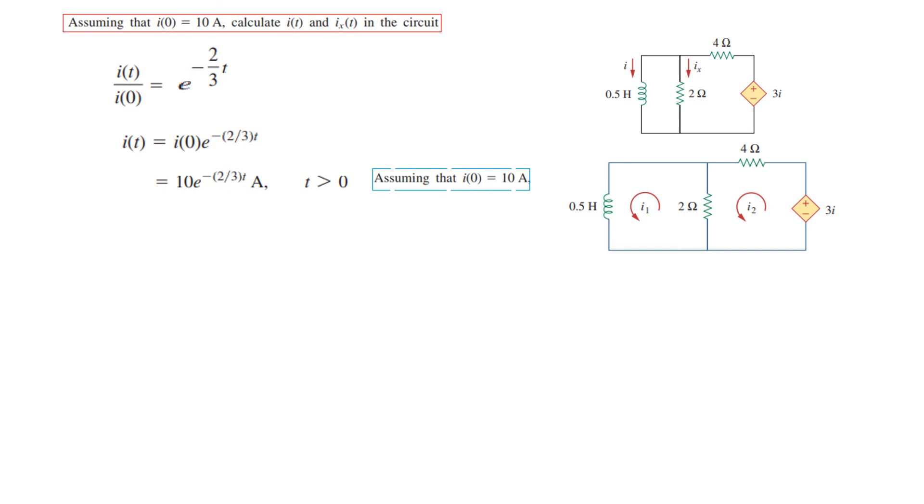Now using the same technique to find the other current Iₓ, we need to find the voltage here. So the voltage V_L, just like we did in the previous method. Iₓ, exactly the same technique, same thing.